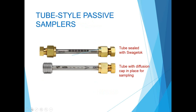The tube style passive samplers come in two configurations: first, sealed with swage lock caps for storage, and then with the diffusion cap in place for sampling. Note that you need a small wrench to remove the swage locks, so be sure you have one in your sampling gear. A common question is whether you can take a thermal desorption tube designed for active sampling and use it for passive sampling. The answer is no — the position of the sorbent bed is critical in the passive tube because it determines the uptake rate, and the passive tubes have the sorbent bed in a precise location that is not the same as with active tubes.